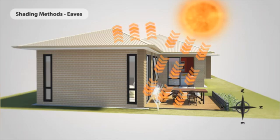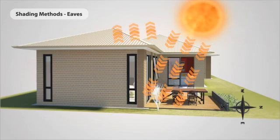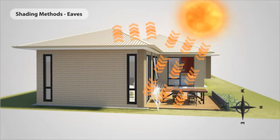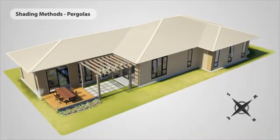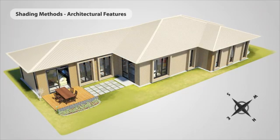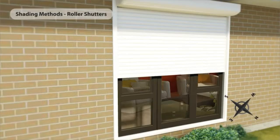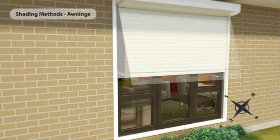Once you have correct block selection and home orientation, it's important to shade correctly so that in winter you can get heat gain from the sun and in summer you are protected from the sun's rays. A simple way of achieving this is to ensure that your home has eaves or other shading devices. Pergolas can be used to keep out the summer sun — remember to install at correct angles so that light can penetrate into the living rooms. Vertical and horizontal architectural features also act as shading devices. You can also use roller shutters or external awnings.